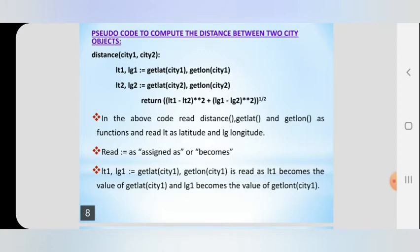The assignment operator assigns the value from the right-hand side to the left-hand side variable. We assign the latitude and longitude of city1 and city2 into variables lt1, lg1, lt2, lg2. Using those values, the distance function calculates the distance between city1 and city2 using the formula: ((lt1 - lt2)² + (lg1 - lg2)²)^(1/2).